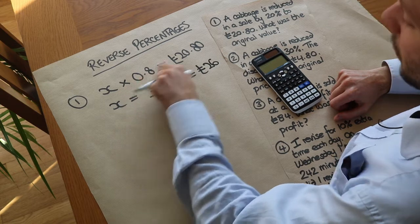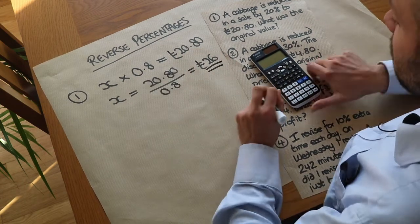So 26 times 0.8 would give that. So the original value was £26.